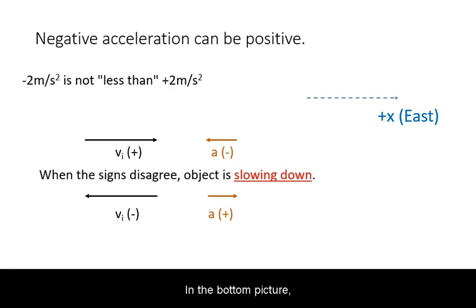In the bottom picture, the acceleration has a positive sign, but that does not mean the object is speeding up. Rather, because the initial velocity is in the negative direction and the acceleration is opposite its sign, the object is slowing down.